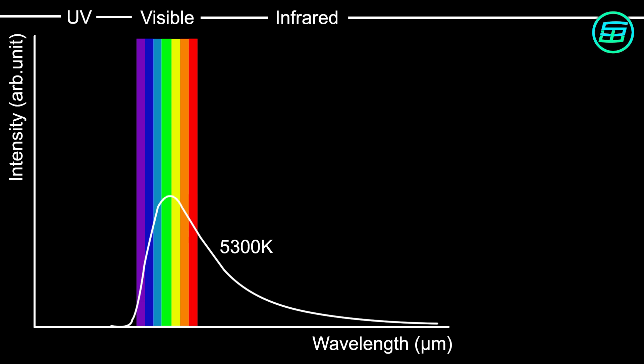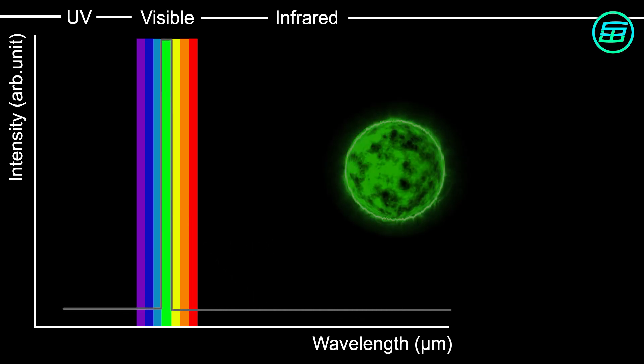For our eyes to see it as green, a star would have to emit only green light, which isn't possible.